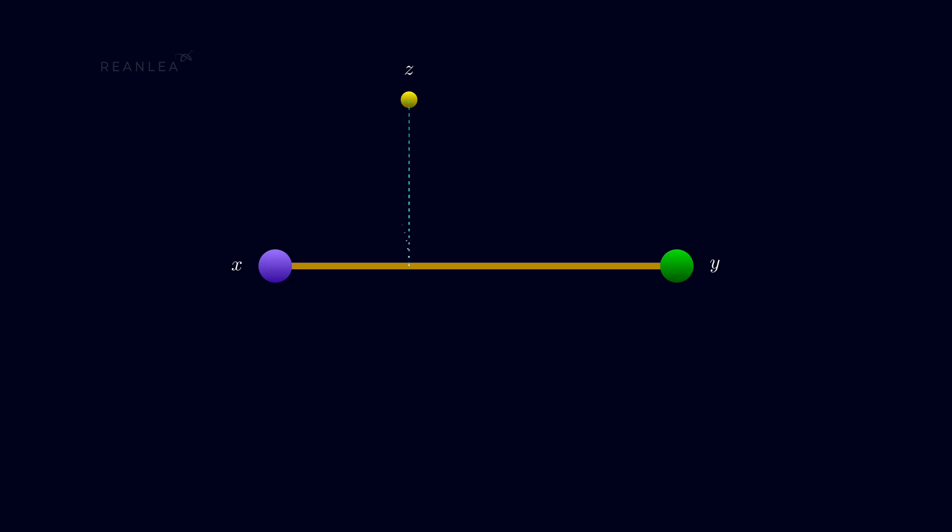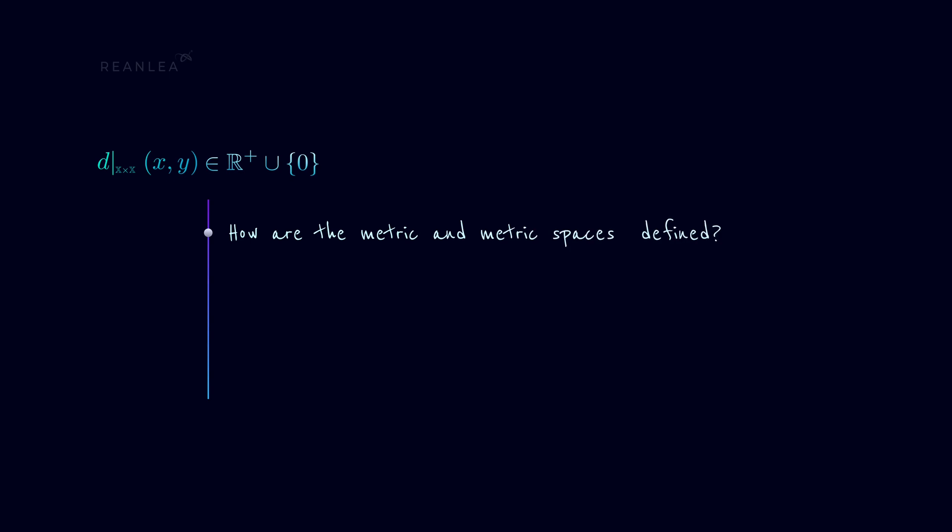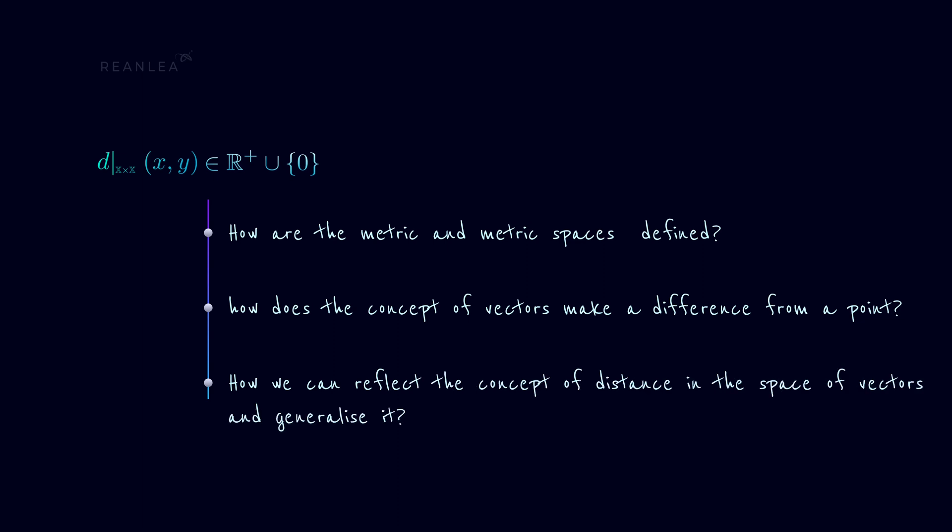So here in this lecture, we'll dig deeper into the fundamentals of distance and how we can derive all the properties of distance and extend them to a more generalized notion. How are the metric and metric spaces defined, and how does the concept of vectors make a difference from a point and play a crucial role in all these things, as well as how we can reflect the concept of distance in the space of vectors and generalize it. On top of that, what if we upgrade the dimension?